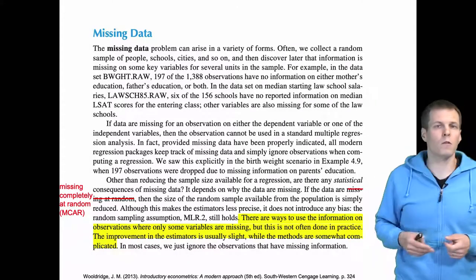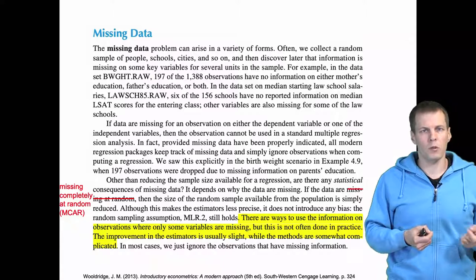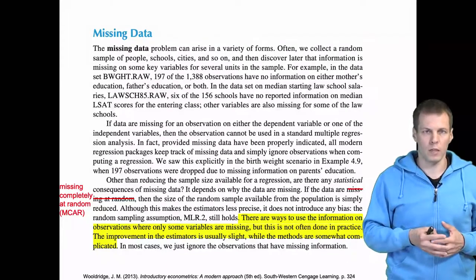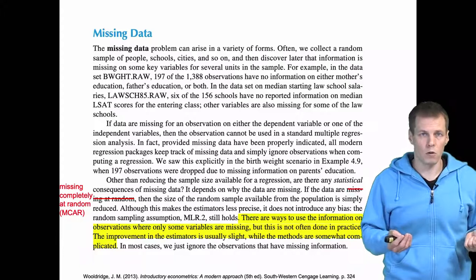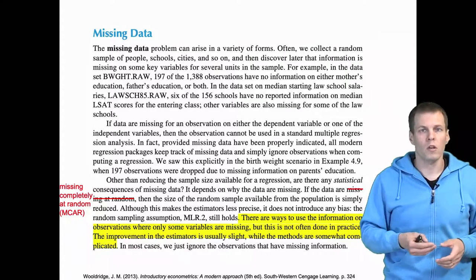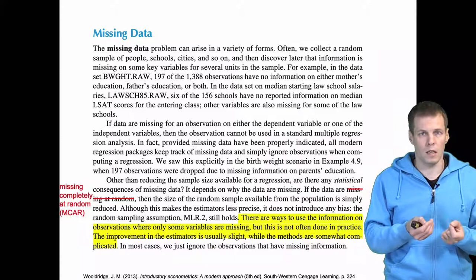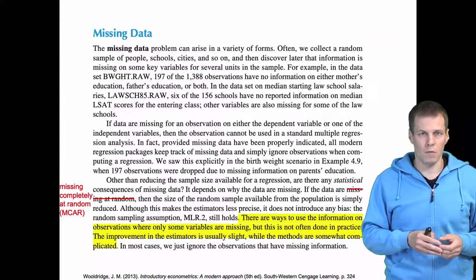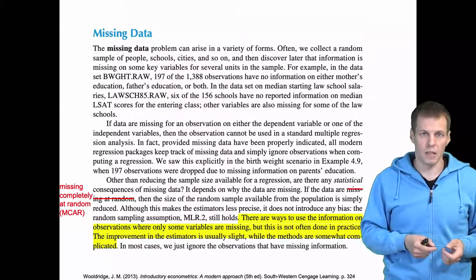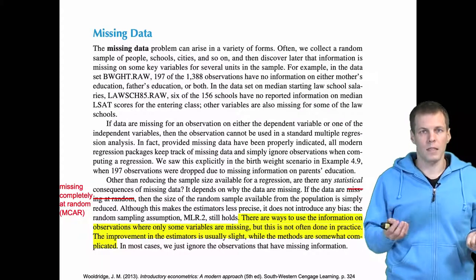Woolridge says these techniques are difficult to apply, and that is also partially true. Multiple imputation can get very complicated — that's one of the two modern missing data techniques — but using maximum likelihood estimation for missing data is very simple from the user's perspective. You simply turn the feature on in your structural equation modeling software and the software applies the technique. In fact, some software defaults to using this missing data analysis because there are really not many downsides to it.